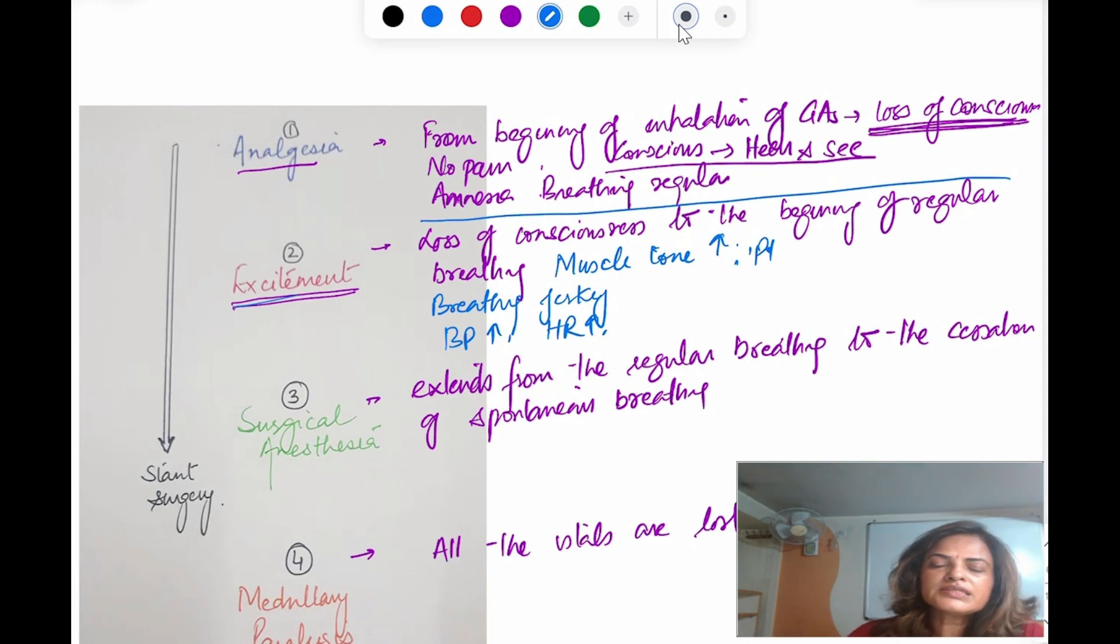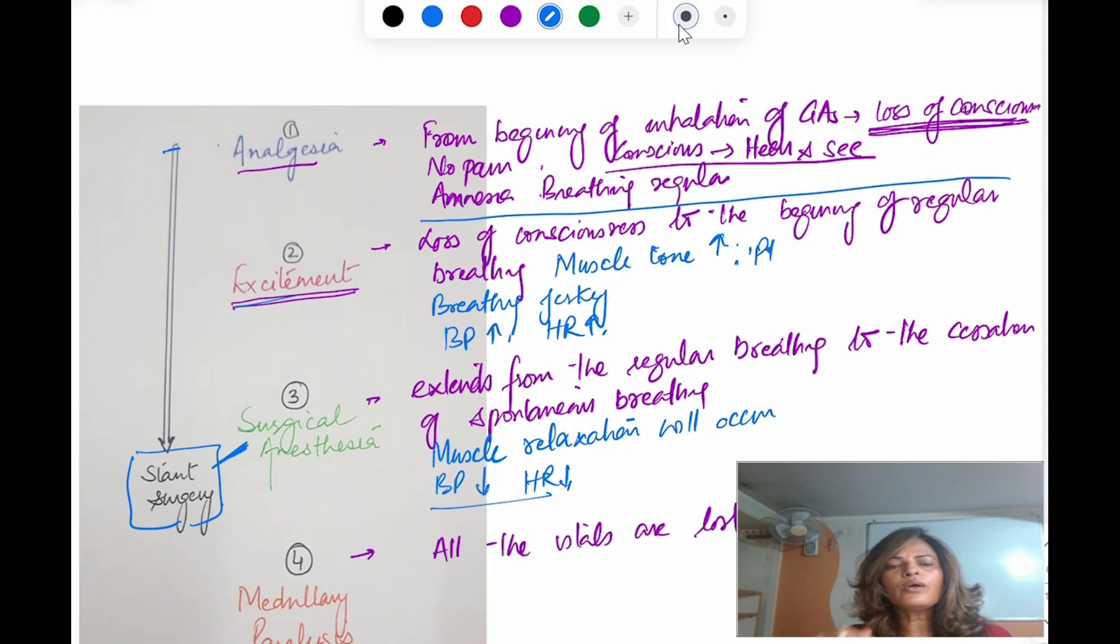Now, coming to the surgical anesthesia stage. This is the stage where all the surgical procedures are done. In this phase we start the surgery. Here the muscle tone decreases, or you can say muscle relaxation will happen. Especially the intercostal muscles will be paralyzed. BP decreases, heart rate decreases. In this stage you have to maintain all the vitals when you are performing the surgery.